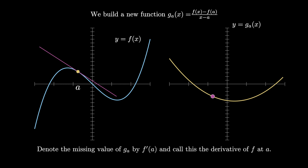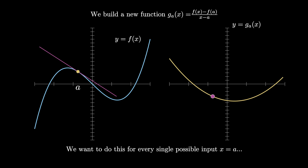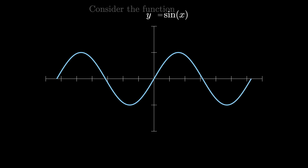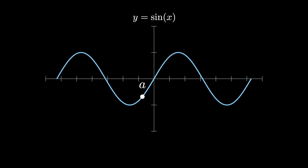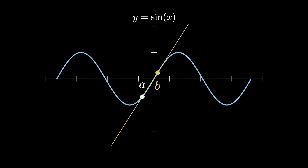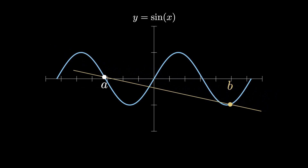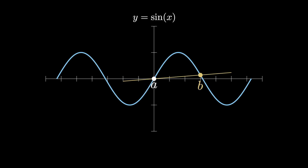The problem is that this process only computes the derivative at a single input. We want a derivative function that computes this instantaneous rate of change for every single possible input x equals A, so we need to let A vary as well. Consider the function y equals sine of x. We can begin with a fixed input x equals A, label the point A comma sine of A, take a second input B, label the point B comma sine of B, and connect these two points with a secant line. We can move B anywhere we like and compute the slope of the appropriate secant line, provided A and B are not the same. We can also move A anywhere we like, getting a family of different secant lines, or vary A and B simultaneously to create an even larger infinite family of secant lines.